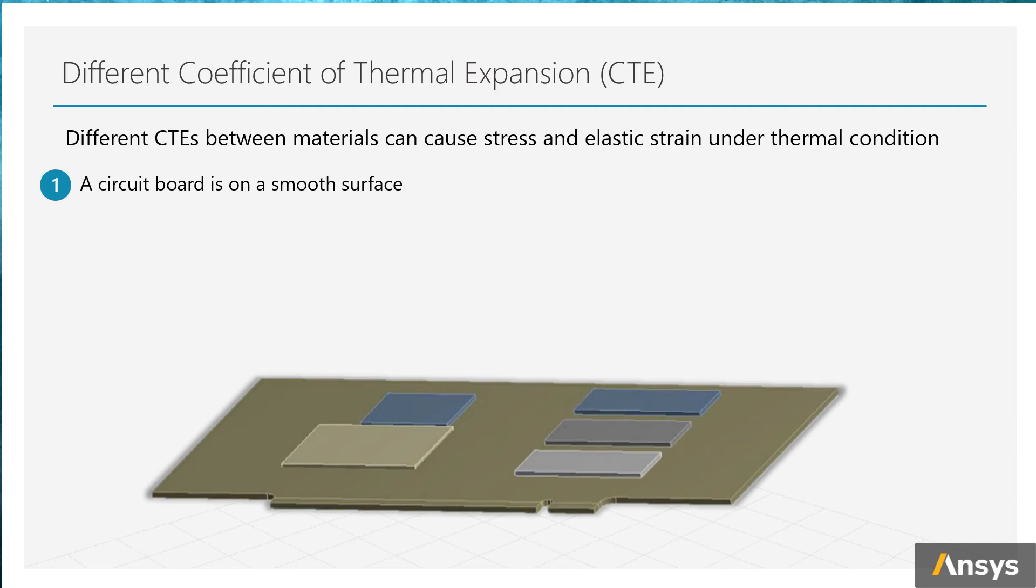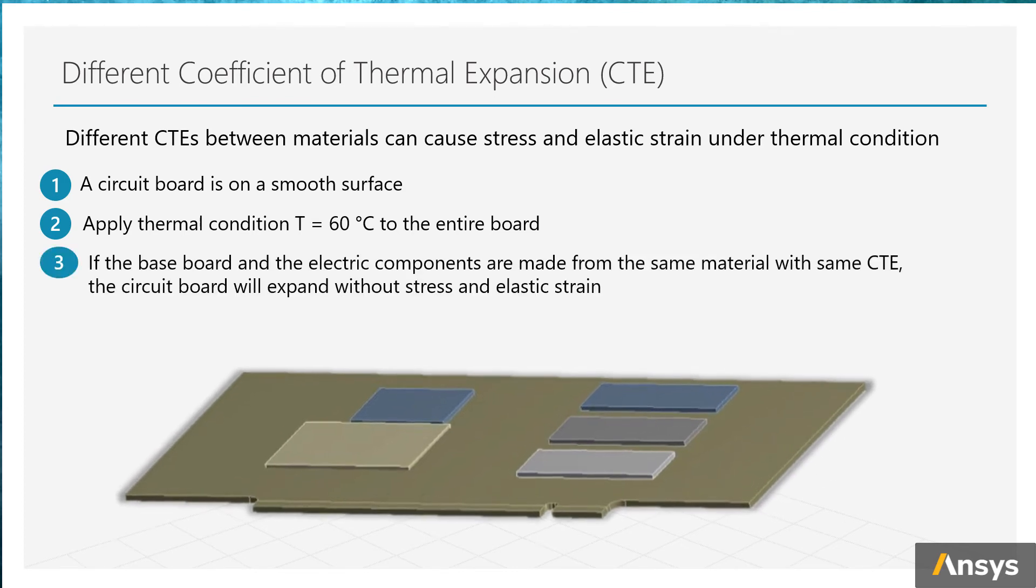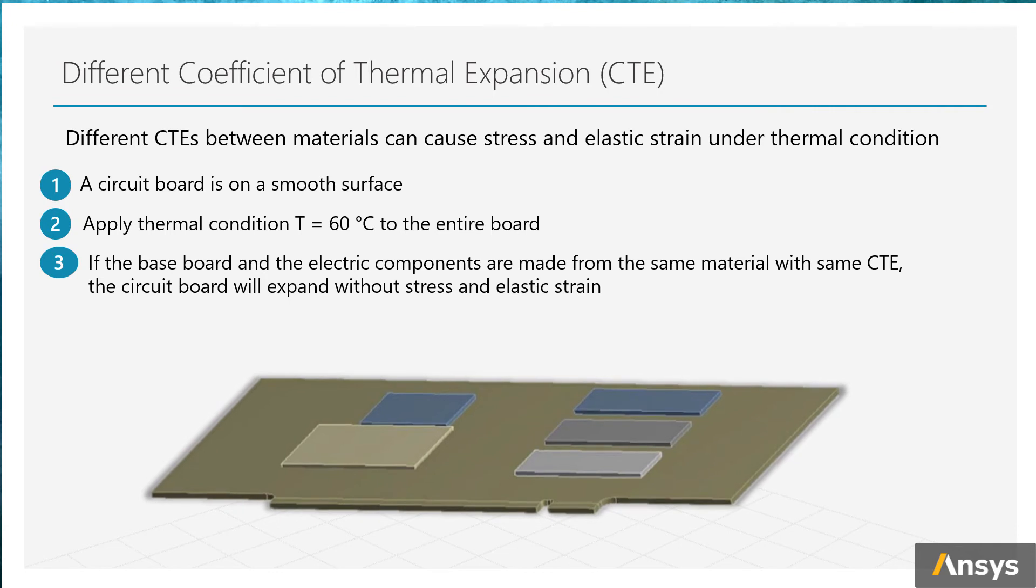Now we apply a thermal condition of 60 degrees Celsius to the entire body. If the baseboard and the electric components are made from the same materials with same CTE, the circuit board will expand freely without stress and elastic strain.